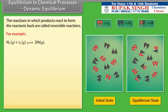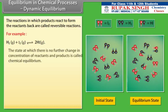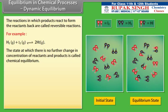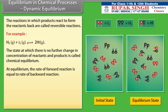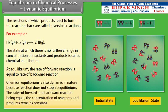For example, hydrogen reacts with iodine to give hydrogen iodide. The state at which there is no further change in concentration of reactants and products is called chemical equilibrium. At equilibrium, the rate of the forward reaction is equal to the rate of the backward reaction. Chemical equilibrium is also dynamic in nature because the reaction does not stop at equilibrium — the rates of forward and backward reactions being equal, the concentration of reactants and products remains constant.